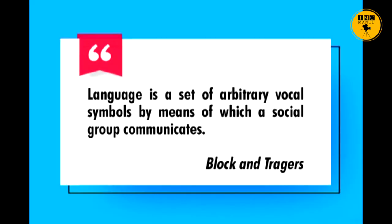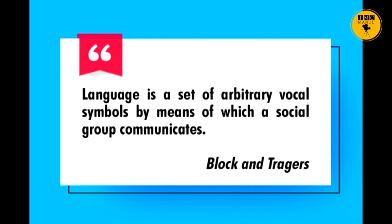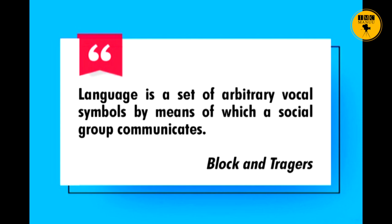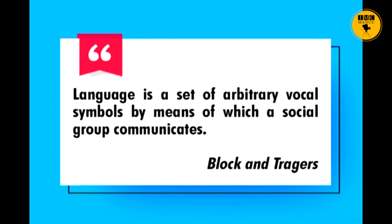Language is to be learned. According to Bloch and Trager, language is a set of arbitrary vocal symbols by means of which a social group communicates. 'Arbitrary' means subject to individual discretion or preference, or sometimes impulse, rather than reason or judgment. So Bloch and Trager want to say that language is a set of arbitrary vocal symbols where there is no logical reason behind words, their sounds, and their meanings — they are arbitrary and based on the preferences and impulses of a social group.